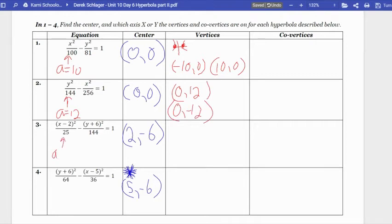Number three is back to opening left and right. The square root of 25 is 5, so I'm going to move left and right 5 from my center. So if I move left 5 from the center, 2 minus 5 is -3. And if I move right 5 from the center, 2 plus 5 is 7. Notice how the y part of my coordinate points never changed. It's because we didn't move up or down; we only moved left or right to get to the vertices of this parabola.